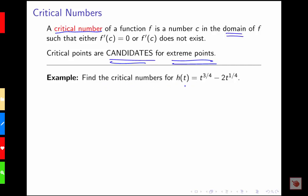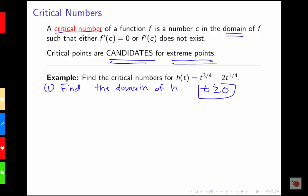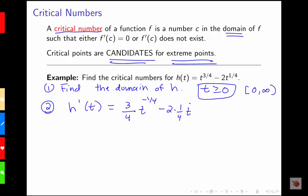To find the critical numbers for h of t equals t to the 3/4 minus 2t to the 1/4, I first need to determine the domain. Since I'm taking even roots, I need t to be greater than or equal to zero, so the domain is from zero to infinity. Taking the derivative, h prime of t is 3/4 times t to the negative 1/4 minus 2 times 1/4 times t to the negative 3/4, which simplifies to 3 over 4t to the 1/4 minus 1 over 2t to the 3/4.